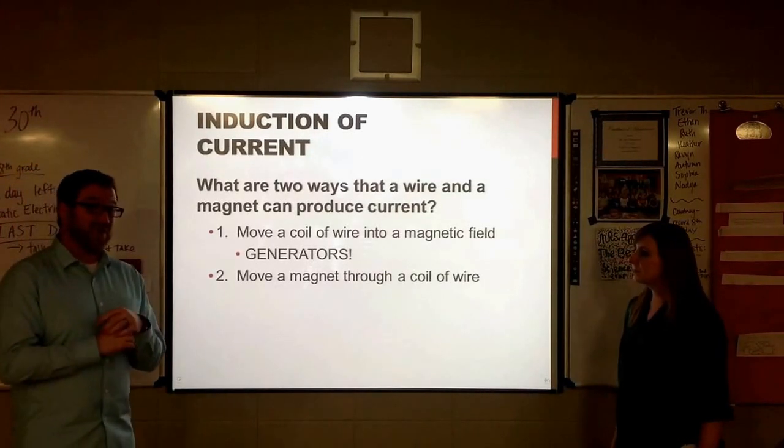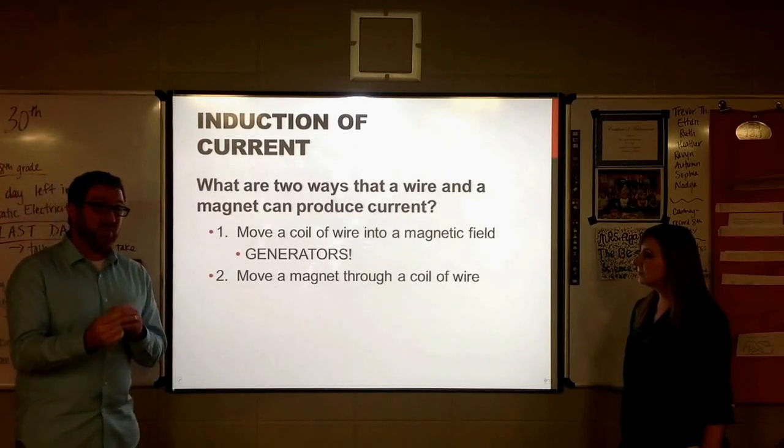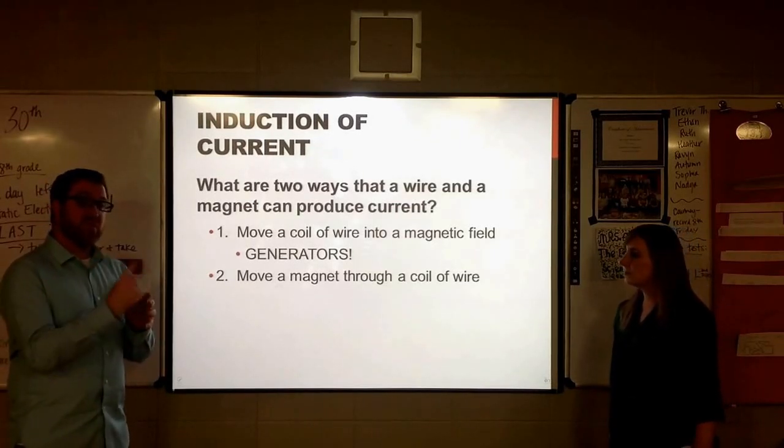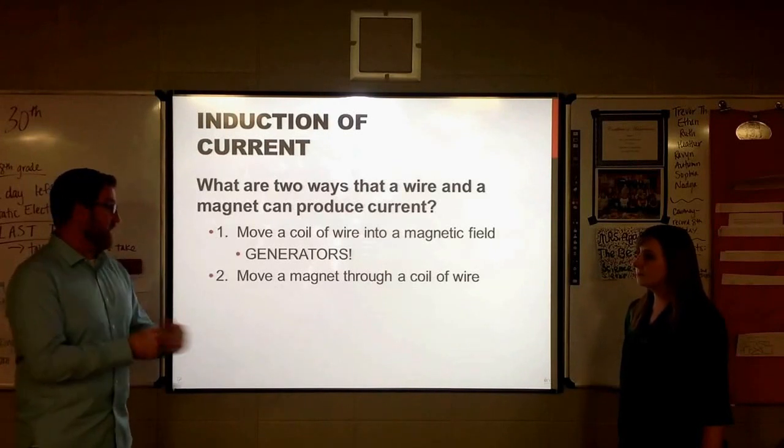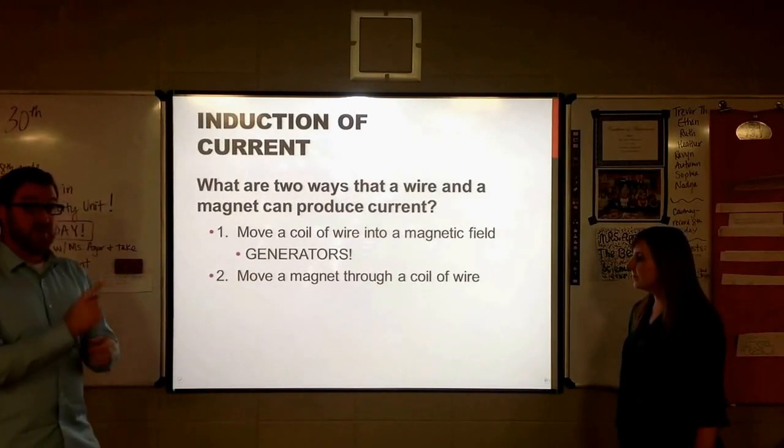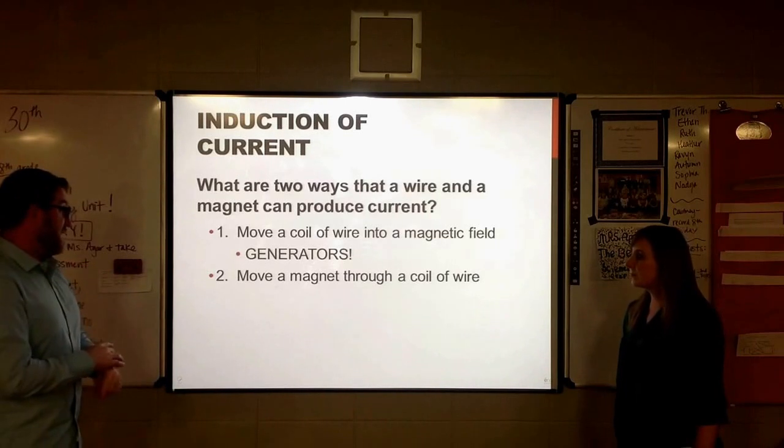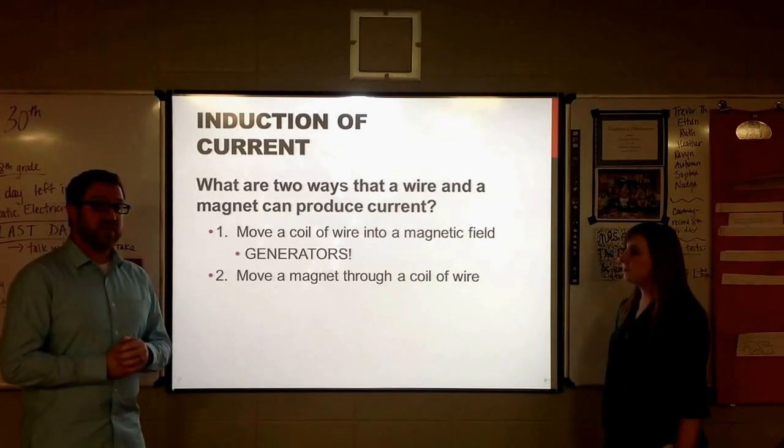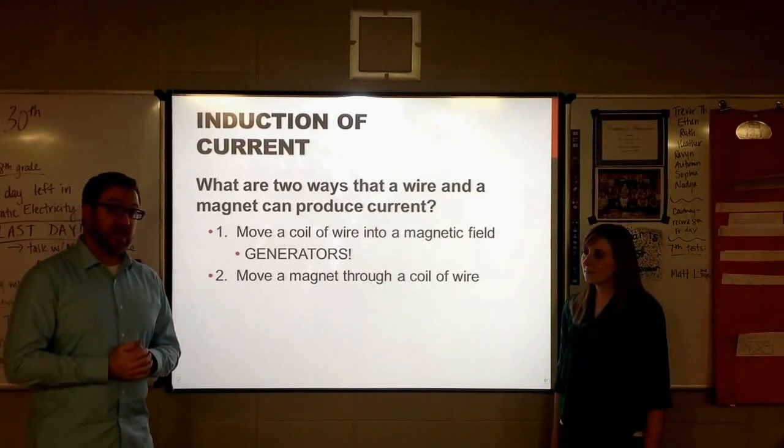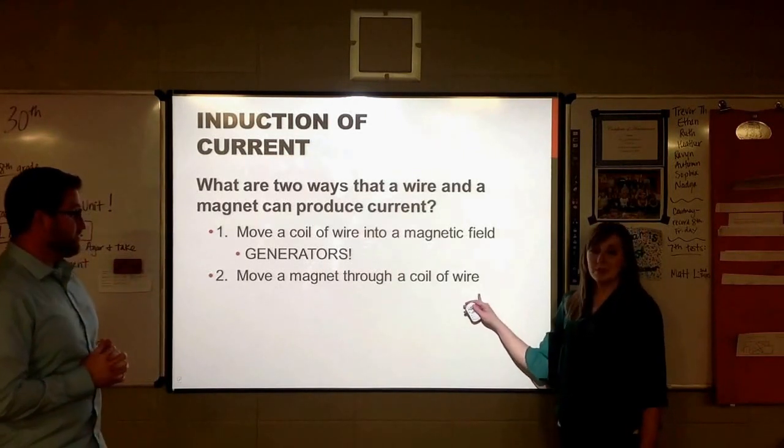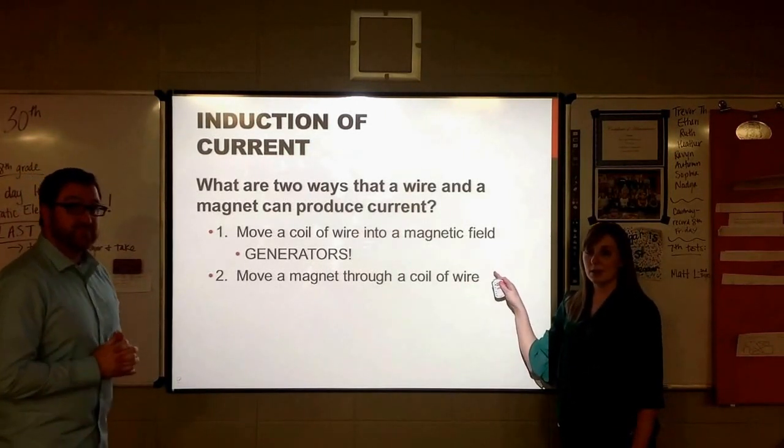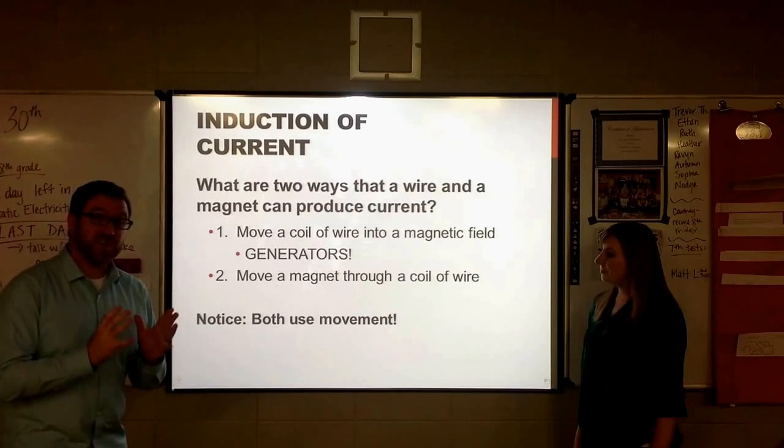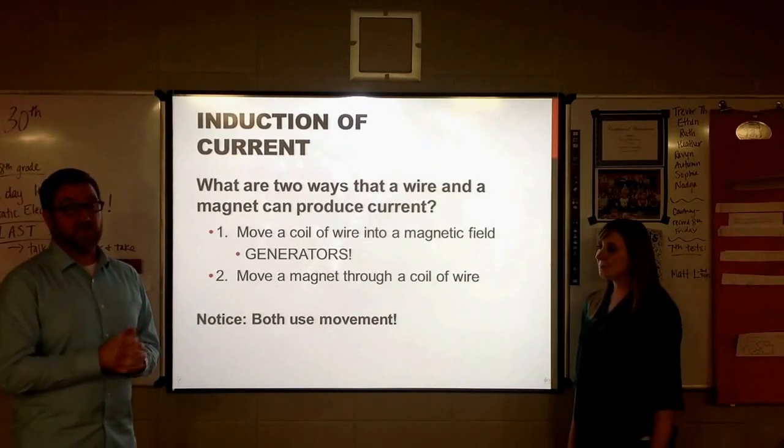So, what are the two ways that a wire and a magnet can produce current? Well, number one, we can take that coil of wire and move it into a magnetic field. So, taking that conductor, which has a whole bunch of free electrons, and getting it to move or spin within a giant magnet. That will give us a generator. We can also do the opposite. We can take that magnet and run it into a coil of wire. That will drive the electrons crazy in that wire and get those to move by induction as well. And you will see an example of this second one here in our activity three. Again, notice, both use movement. They both achieve that mechanical energy.